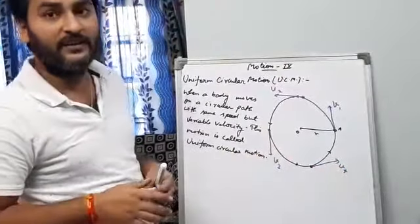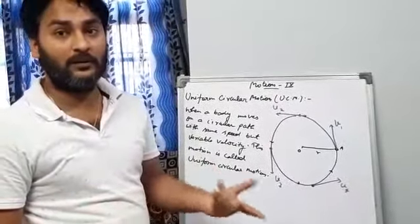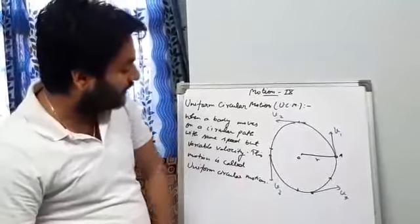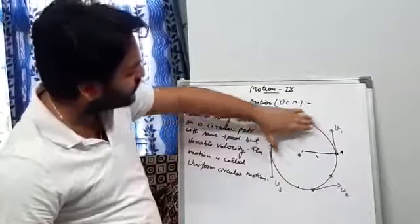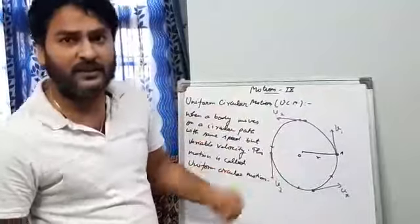As you know, velocity is a vector quantity and the vector quantity is represented by the magnitude and the direction. And as you can see in the following figure, the direction of the velocity is changing regularly. That means velocity is changing regularly.